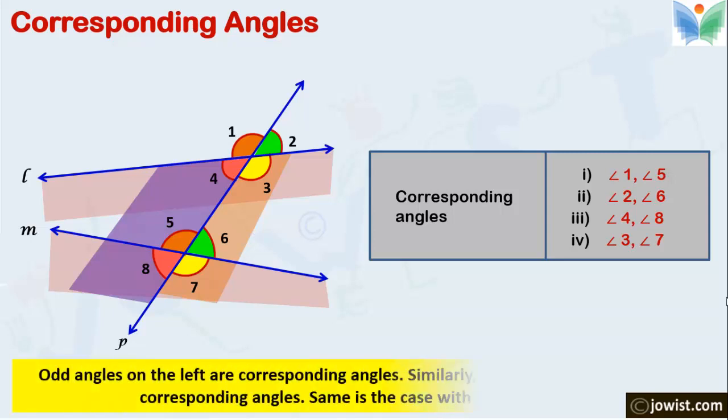The odd numbers on the left of transversal P are 1 and 5 and these angles are corresponding angles. Similarly the even numbers on the left of line P are corresponding angles. Similarly observe right of line P.